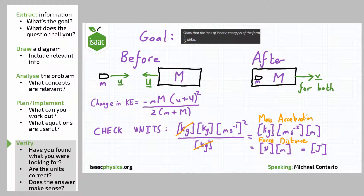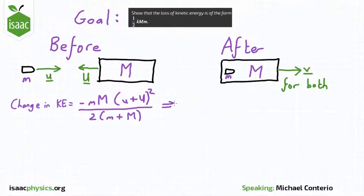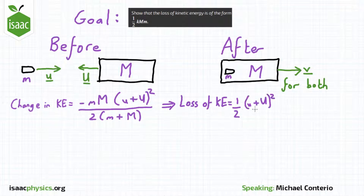We can also look at the equation and see whether it intuitively makes sense. We can see a term of little u plus capital U. Since in our diagram we defined velocities as in opposite directions — the bullet and block moving towards each other — little u plus capital U is in fact the relative speed of the bullet or block with respect to the other. This means as this relative speed gets bigger, the amount of kinetic energy lost in this inelastic collision increases. This makes sense, as if there was no relative velocity between the two, you wouldn't expect any kinetic energy loss. Now that we're happy with the equation, we can compare it to the form given in the question and work out what K is.